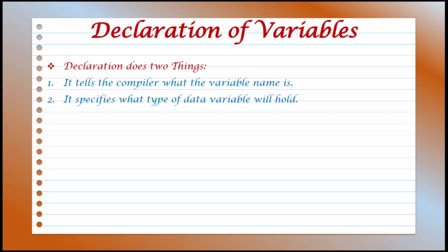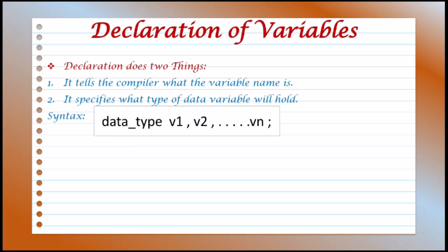Now we will see how a variable is created. The syntax for declaring a variable is: datatype, space, v1, v2, v3, up to vn, and then semicolon.